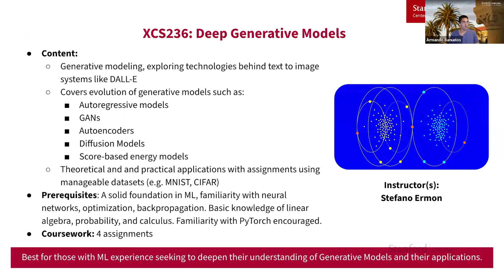Next we'll be going over XCS 236, Deep Generative Models. This course is for those who have some experience with ML and are looking to deepen their understanding of generative models and their general applications. Generative modeling techniques explored include autoregressive models, GANs, autoencoders, and diffusion models, just to name a few. It's a mix of theoretical and practical, using manageable datasets to understand the deeper algorithms. Having a solid foundation in ML and deep learning frameworks is important, familiarity with PyTorch is encouraged, and there are a total of four assignments.